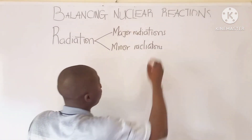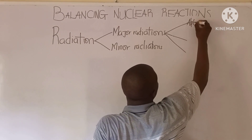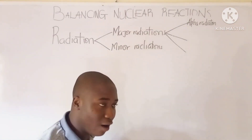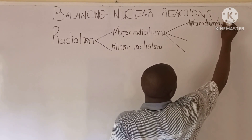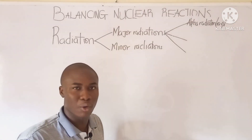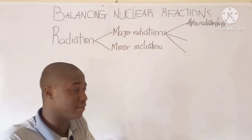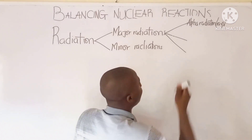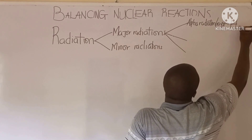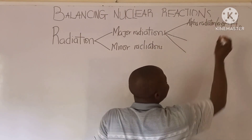The major radiations have three types. The first is called the alpha radiation, also called alpha rays. Alpha radiation is given a symbol, because all of these radiations have their specific symbols, which must be noted before we can balance a nuclear reaction. Its symbol is the helium atom — He — with mass number 4 and atomic number 2.